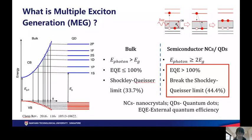What is multiple exciton generation? Well, in the typical scenario, the absorption of one photon only leads to one electron-hole pair.